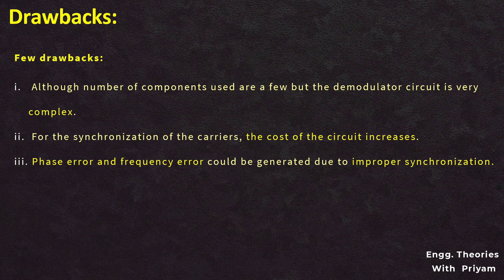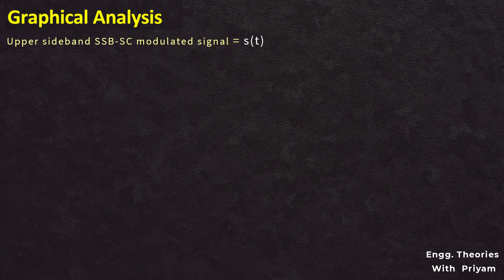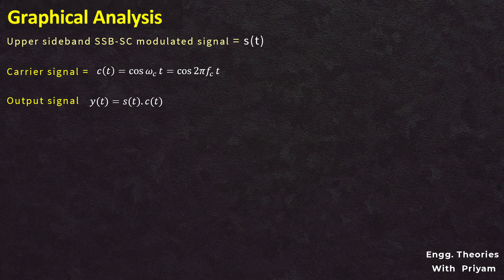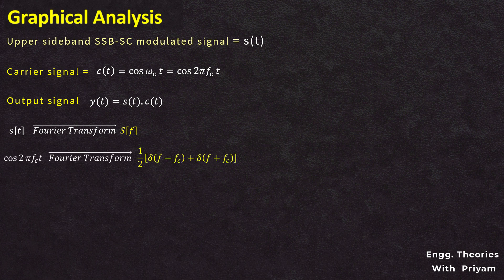For the graphical analysis, the upper sideband SSBSC modulated signal is s(t), the carrier signal c(t) = cos(2π·fc·t), and the product modulator output y(t) = s(t)·c(t). The Fourier transform of c(t) is C(f) = (1/2)[δ(f − fc) + δ(f + fc)]. Since y(t) = s(t)·c(t), the frequency domain result is the convolution Y(f) = S(f) * C(f).